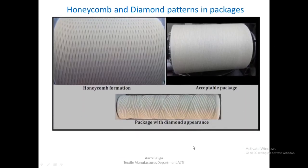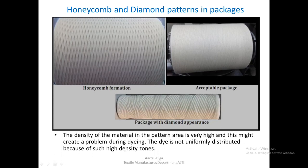Having seen all the parameters that affect package density, let us now see what honeycomb or diamond patterns are in a package. A honeycomb or diamond pattern appears in the package when yarn is wound at the same place over and over again — that particular area becomes very dense and appears as a pattern. The density in this area is very high and might create a problem during dyeing, as dye is not uniformly distributed because of such high-density zones.